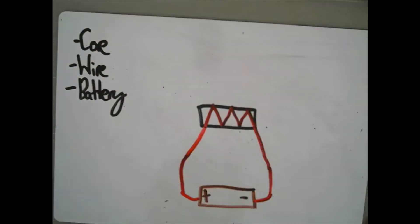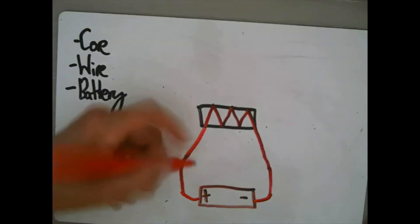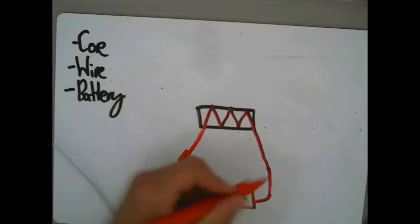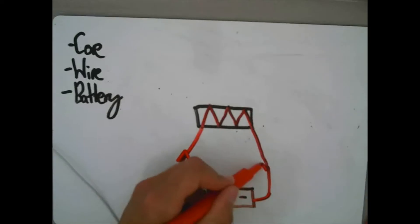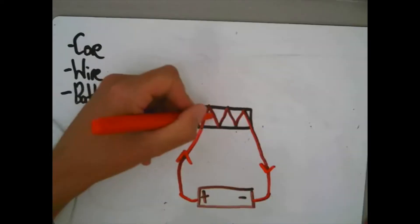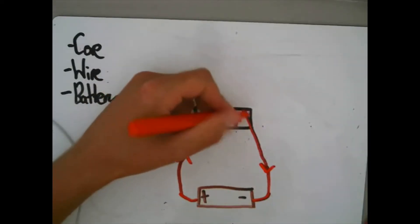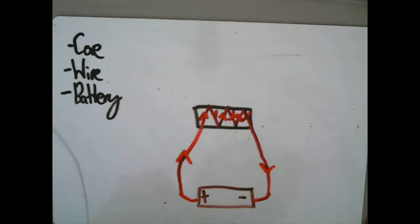Since an electromagnet involves a current flowing from a battery, you can use this to turn the electromagnet on or off. The diagram on the whiteboard shows an electromagnet when the current is off. When we turn the current on, the current flows through the wire and a magnetic field forms around it.